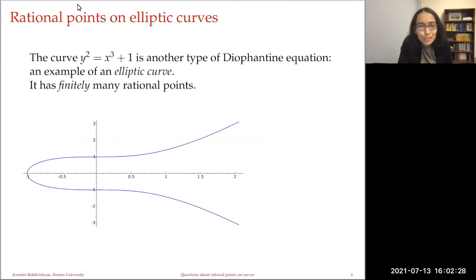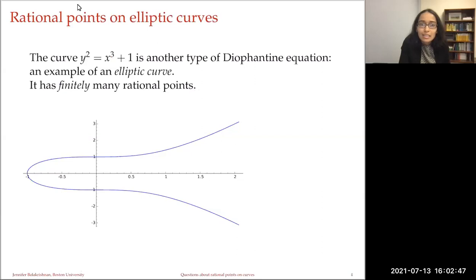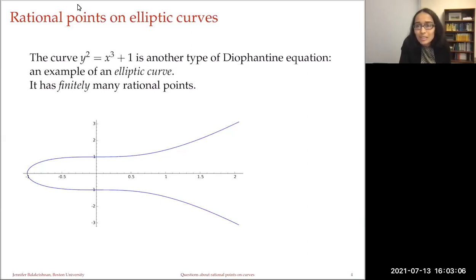Moving along in degree — we were earlier looking at the circle with x and y in degree two, and now if we look at y having degree two but x having degree three, we look at the curve y squared equals x cubed plus 1. This is another type of Diophantine equation, and this is an example of a curve known as an elliptic curve. This is not at all obvious, but it turns out that this elliptic curve has finitely many rational points. You might be able to spot a few just by staring at the equation for a few minutes. But then how do you prove that you've found all rational points?